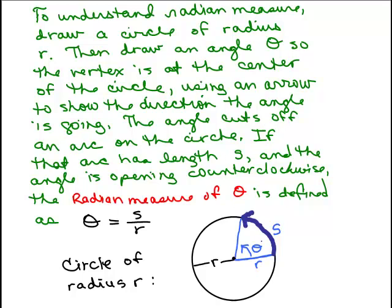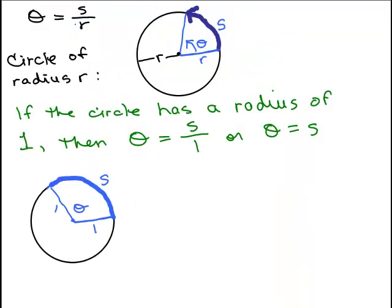If that arc has length S, and the angle is opening counterclockwise, which it is, the radian measure of theta is equal to S over R. So we take this angle measure. We take the length of this blue line here, the dark blue, and divide it by the radius. That is the measure of theta. That is the definition of the radian measure of theta. It's like you get out the dictionary and that's what it says.